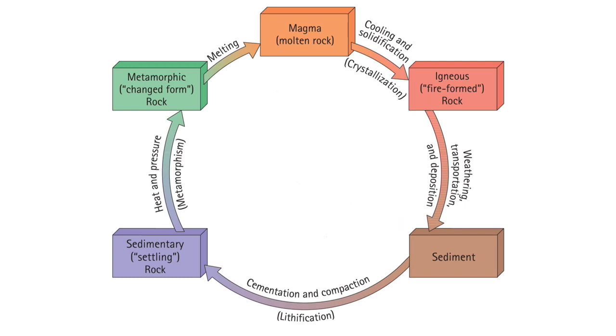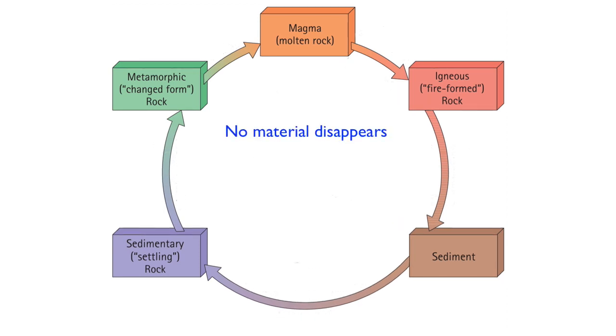The rock cycle is another example of mass conservation in the natural sciences. No material disappears; rock material is simply recycled to become new rock, and the Earth stays the same size. Does this mean that all rock layers have been recycled, that there are no original rocks on Earth's surface?